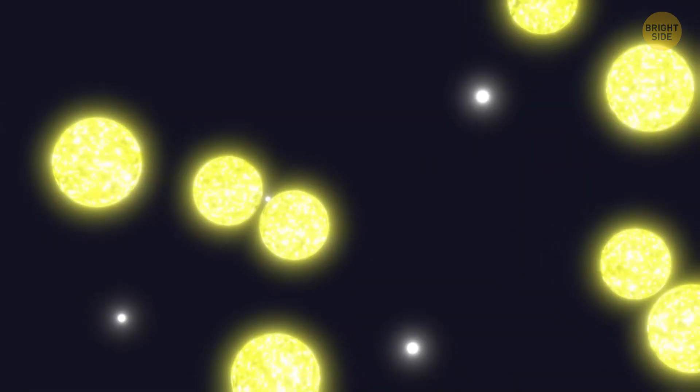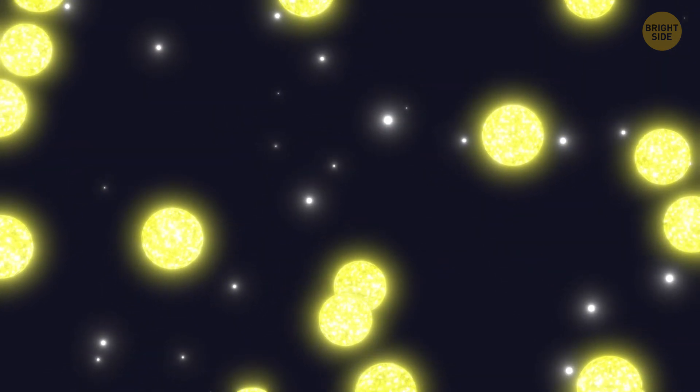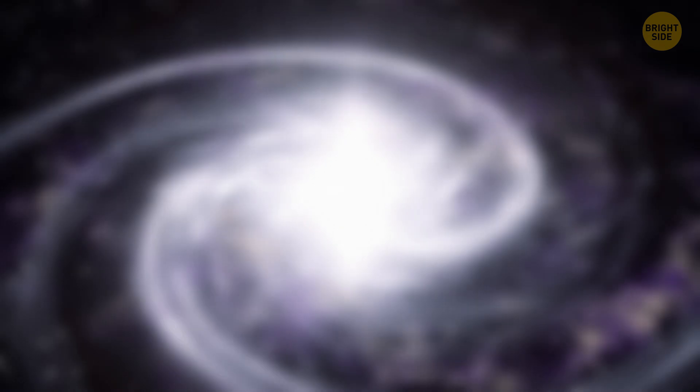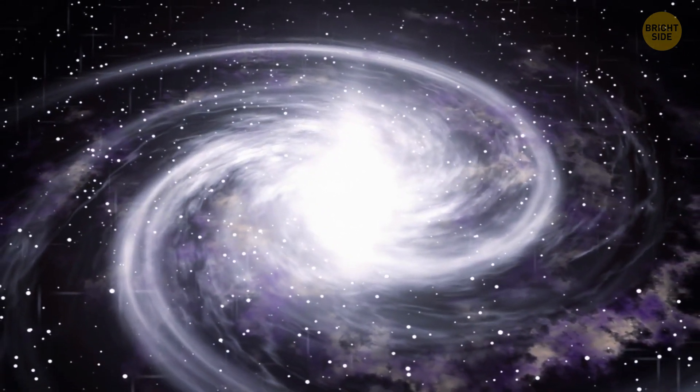Stars aren't like our sun. They move randomly in all possible directions and planes. Plus, they all move at different speeds. So, gravity is going crazy there, and this makes the bulge look more like a sphere, or an ellipse.